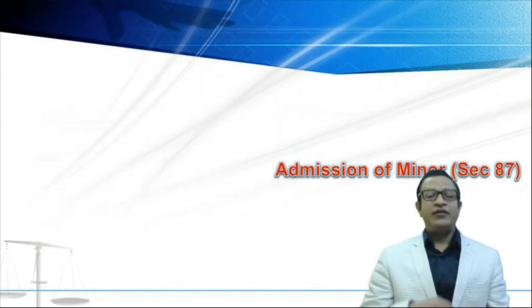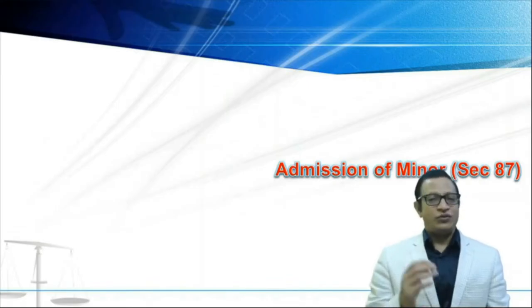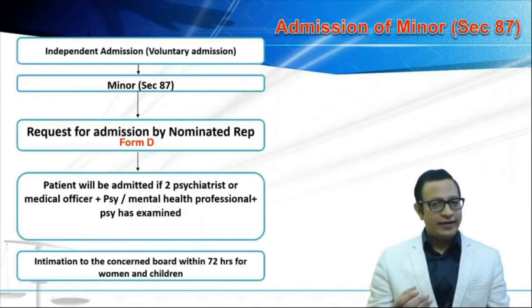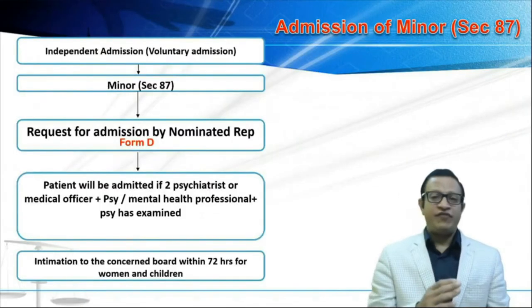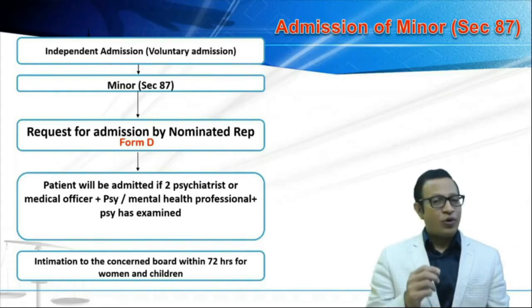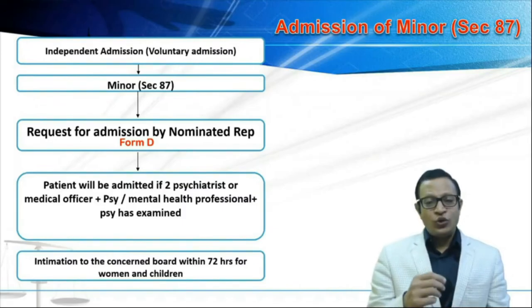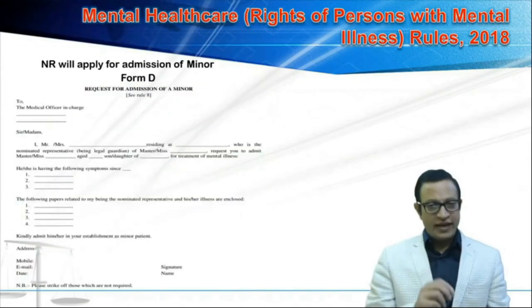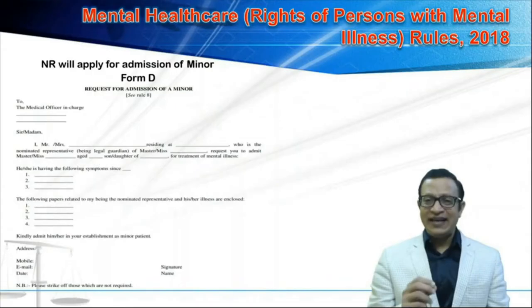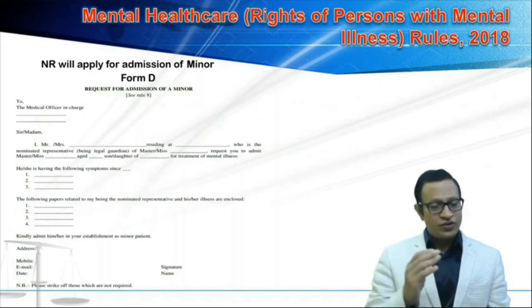Moving on to admission of minor: a minor is any person below the age of 18, and this falls under section 87. For independent admission of a minor, the parents or the NR or legal guardian will give an application in form D. Form D is available under Mental Health Care Rights of Persons with Mental Illness Rules 2018. Once the NR fills this pro forma and gives it to the medical officer in charge, the following steps must be taken.